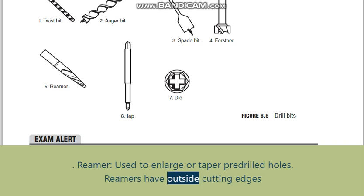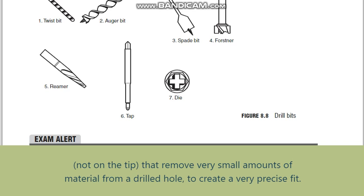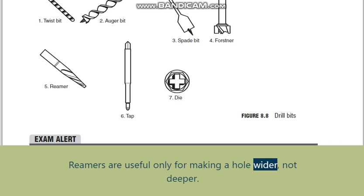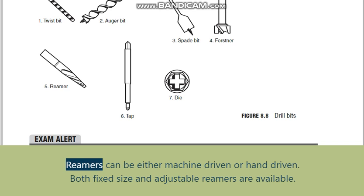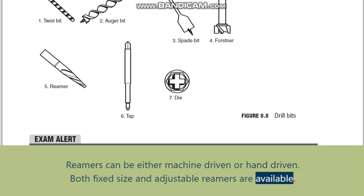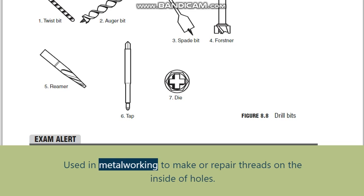Reamer: used to enlarge or taper pre-drilled holes. Reamers have outside cutting edges, not on the tip, that remove very small amounts of material from a drilled hole to create a very precise fit. Reamers are useful only for making a hole wider, not deeper.